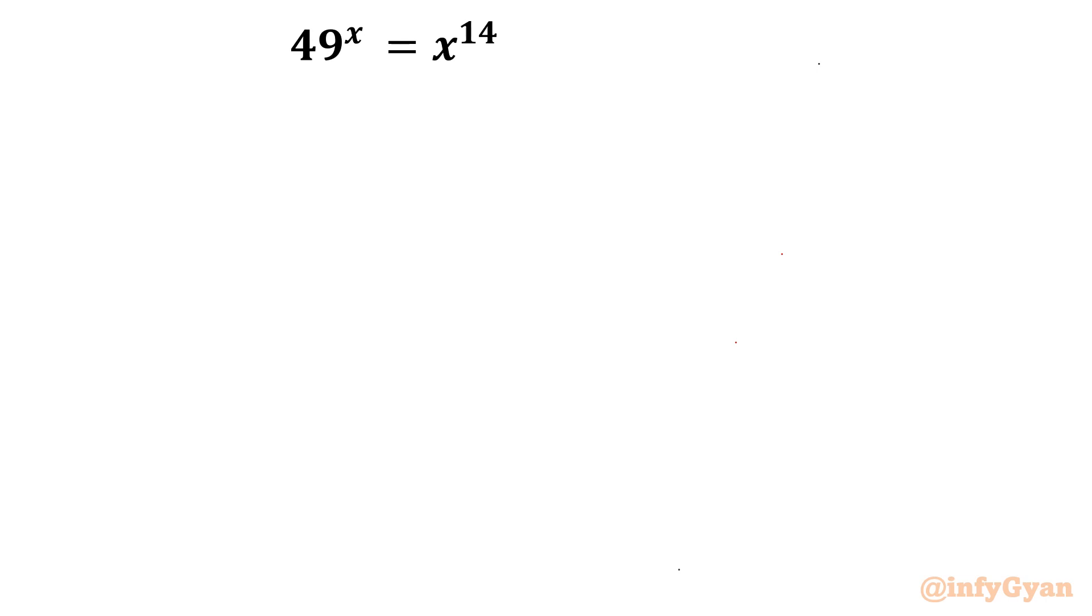So let's get started by writing our method number one, that is using log. Let me take ln, natural log both sides. So I will write ln 49^x, that would be ln x^14. Now we know that the standard property of log and very powerful, that is b ln a. So I will write here x ln 49 equal to 14 ln x.